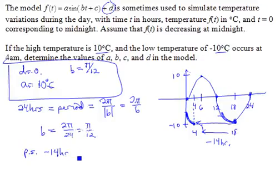And from there, we can take the formula for the phase shift to be negative c over b, and solve for the value of c that we don't know. Remember that we do know the value of b already. That's π over 12.